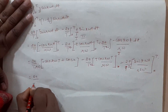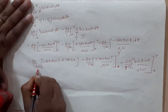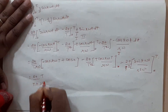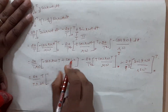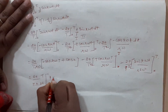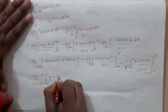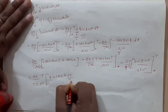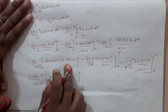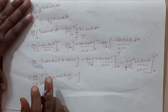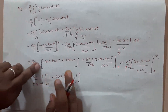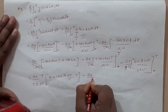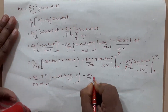Minus 2a upon t·r, and this will be 2π·t, cos(0) ki value 1, minus cos(r). Minus 2a upon t.